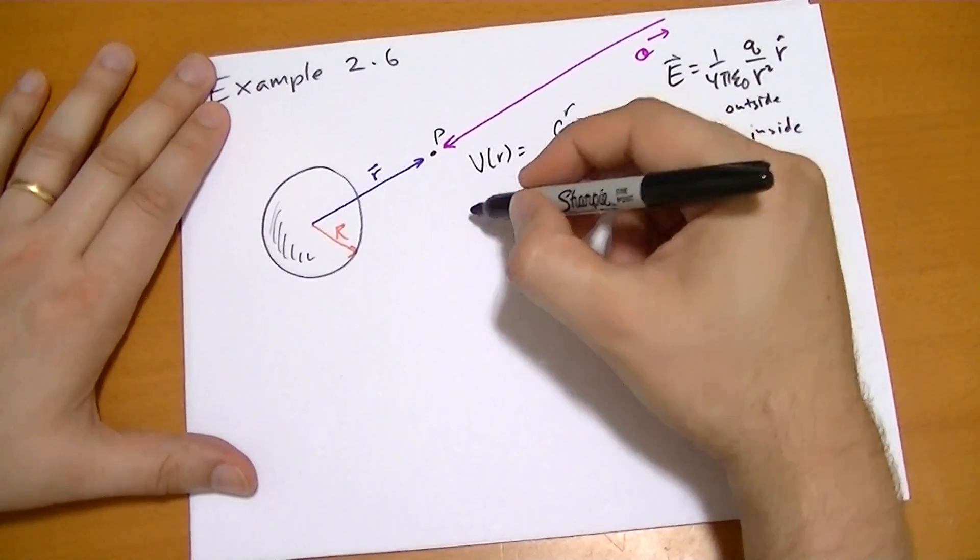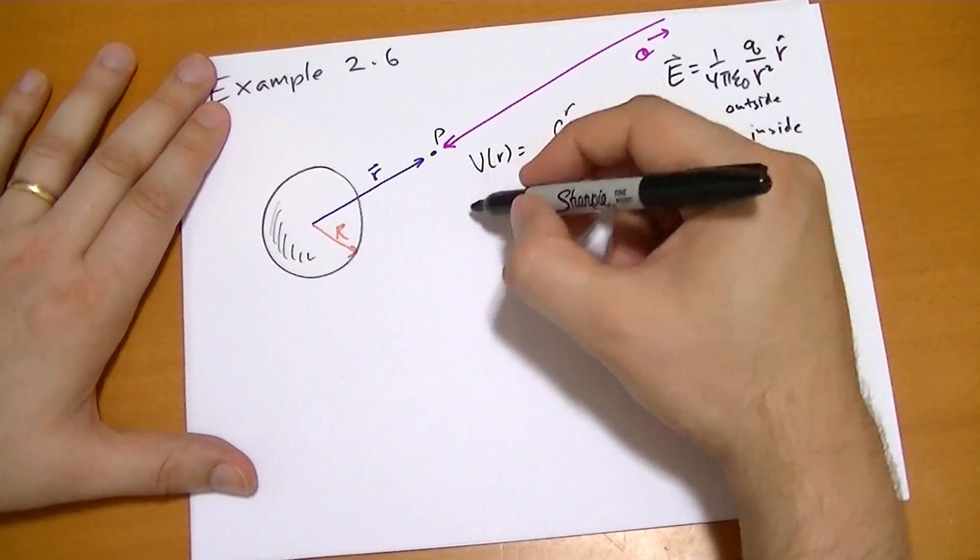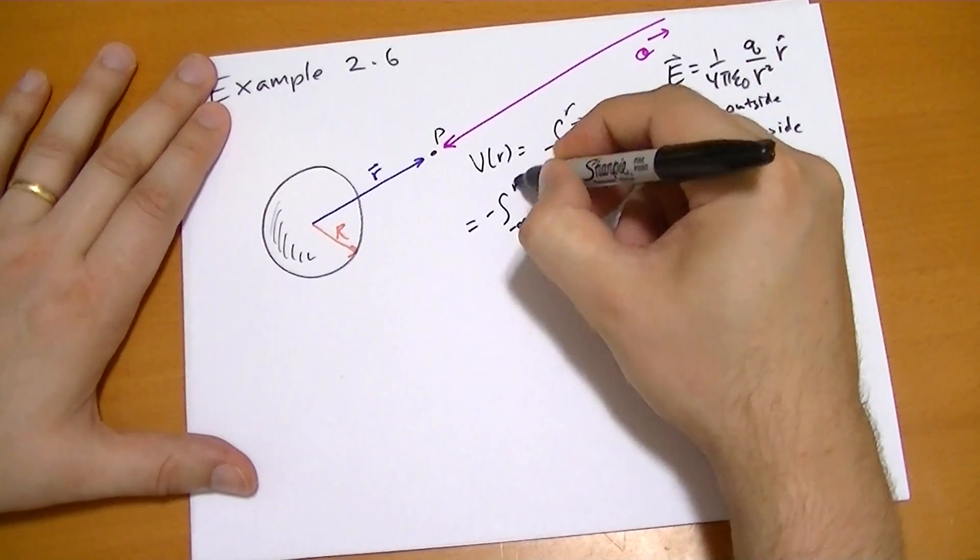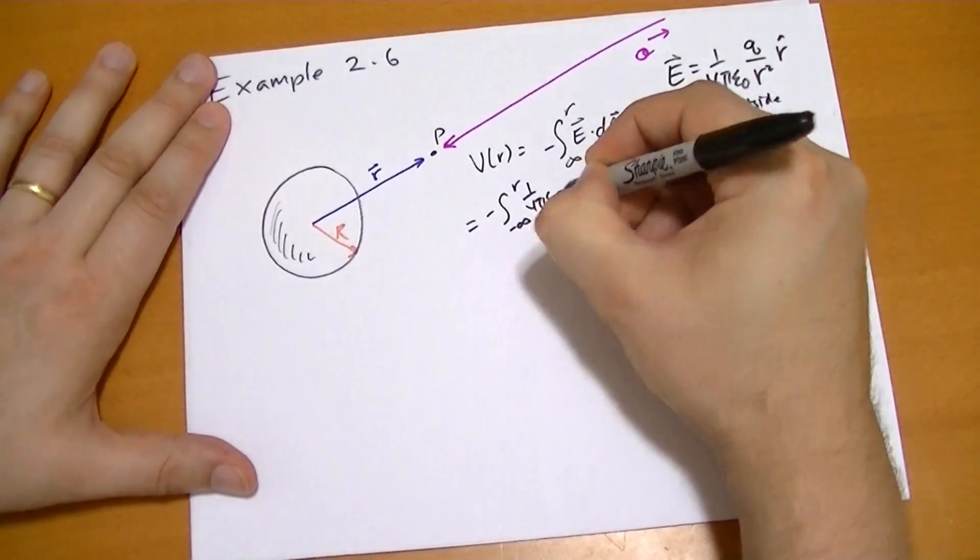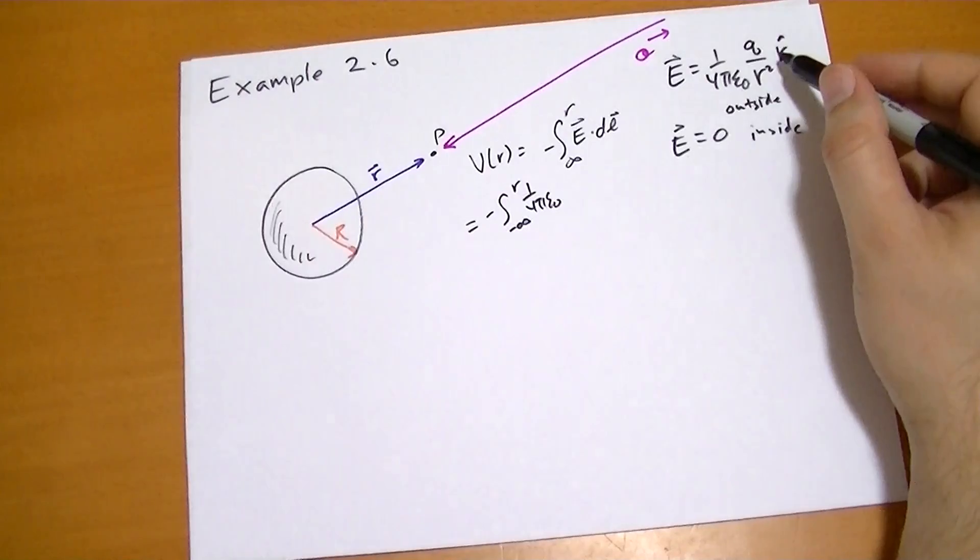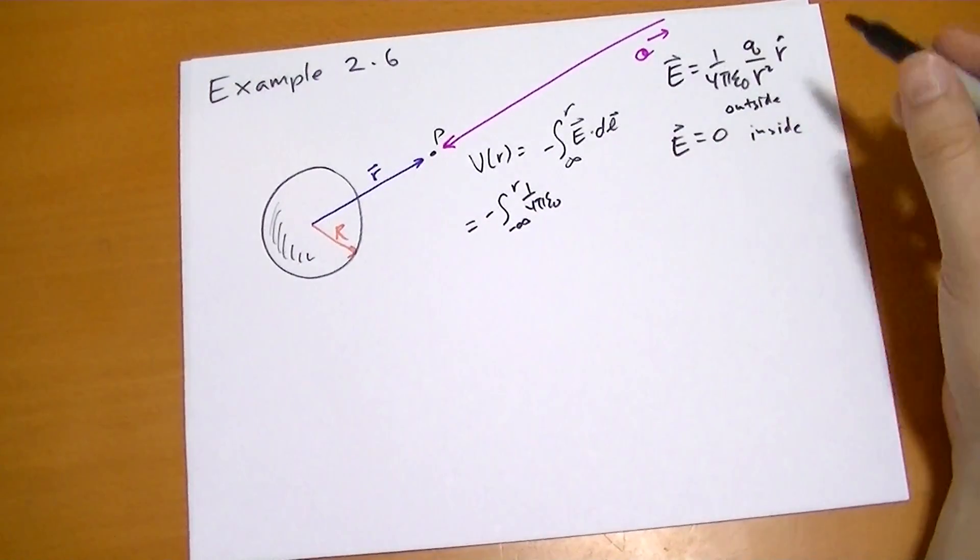And so solving for that is rather trivial. So we get minus integral minus infinity to r of 1 over 4 pi epsilon naught. And then e dot dl, it's just r hat dot the r hat component of dl, which doesn't have any factors like the theta or the phi components do.